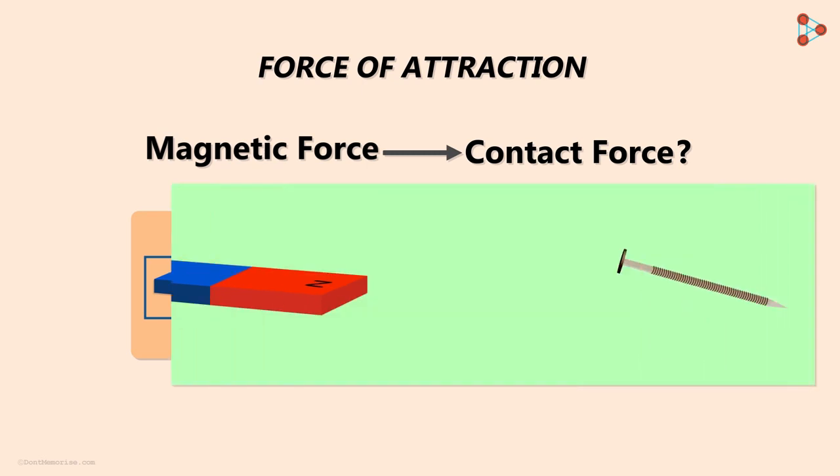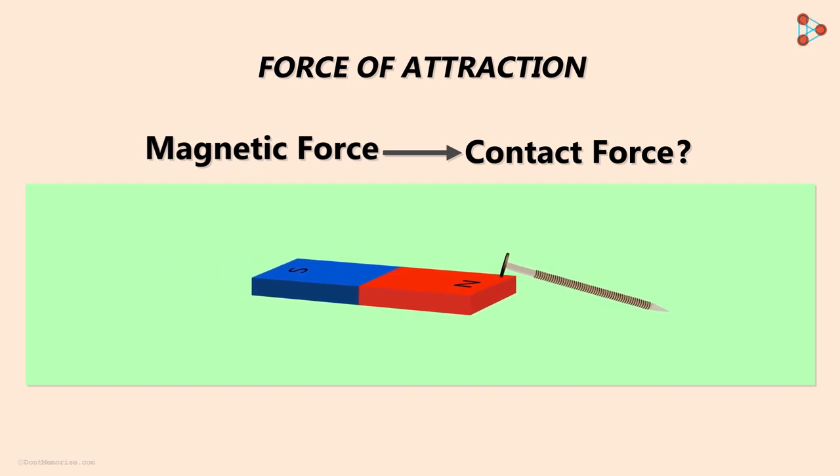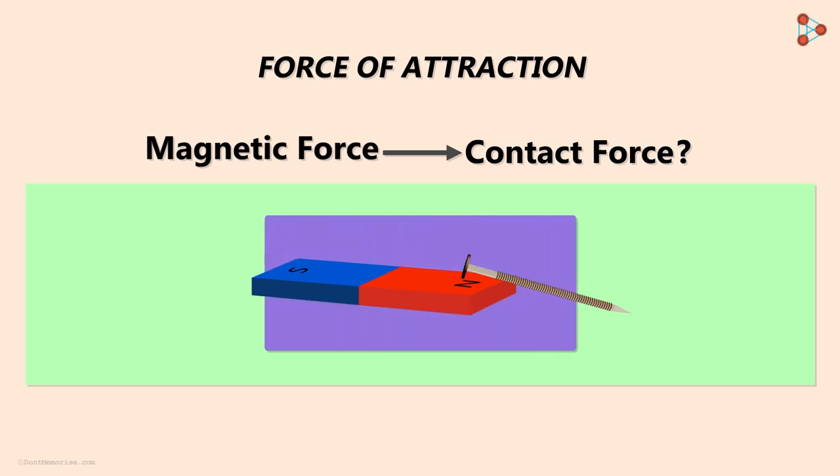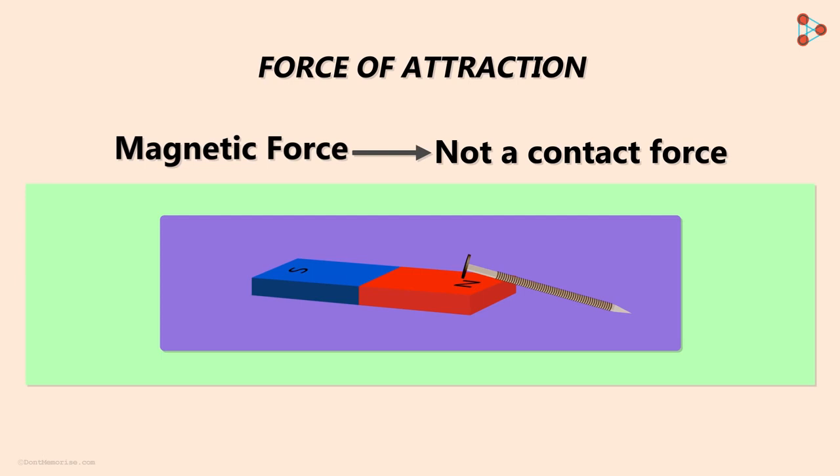Let's look at the animation in slow motion. We are moving the magnet towards the nail. And at this point, the nail also begins to move towards the magnet. It means the force came into action even when there was no contact between the magnet and the nail. Hence we can say that a magnetic force is not a contact force. Contact is not necessary for the magnetic force to work on the nail.